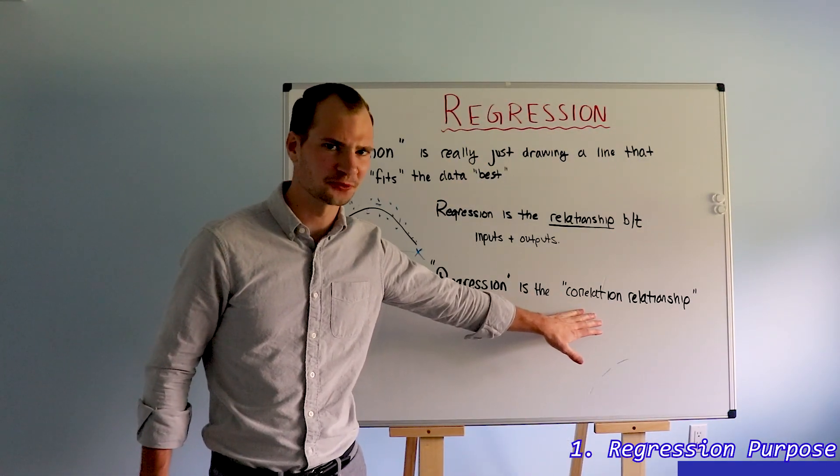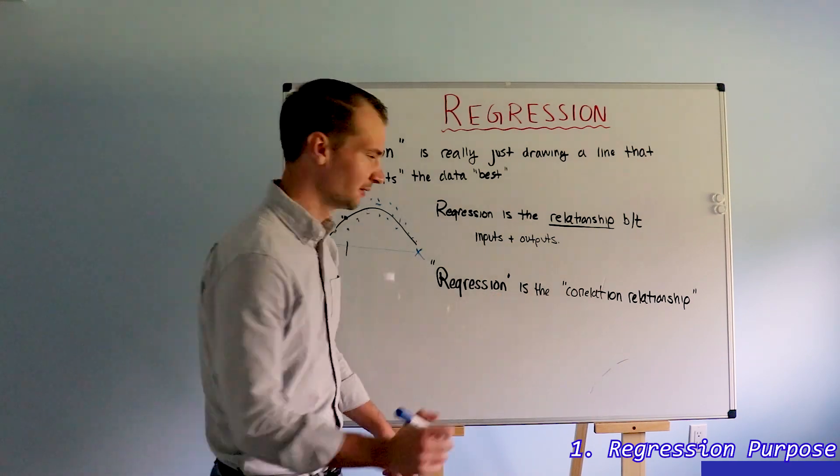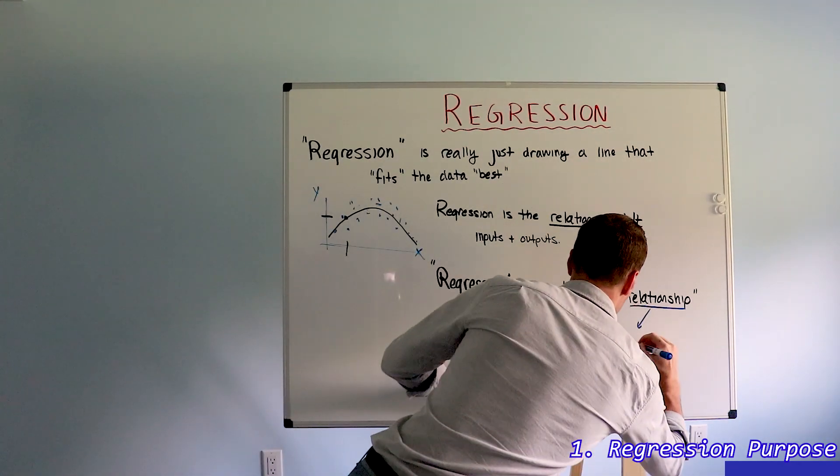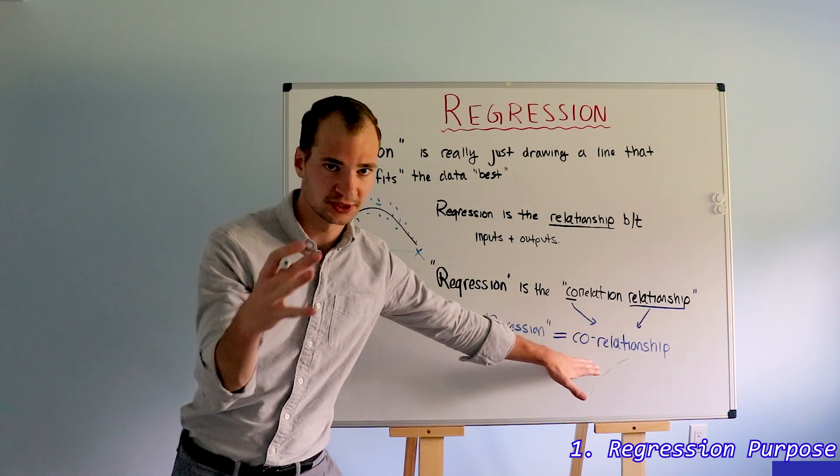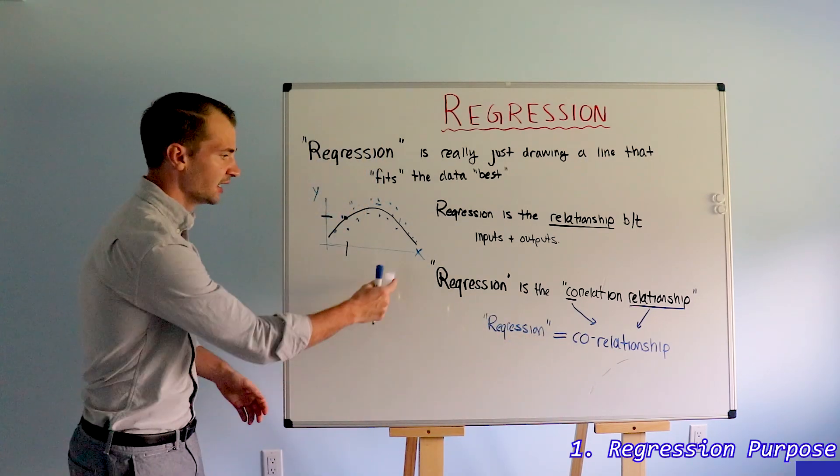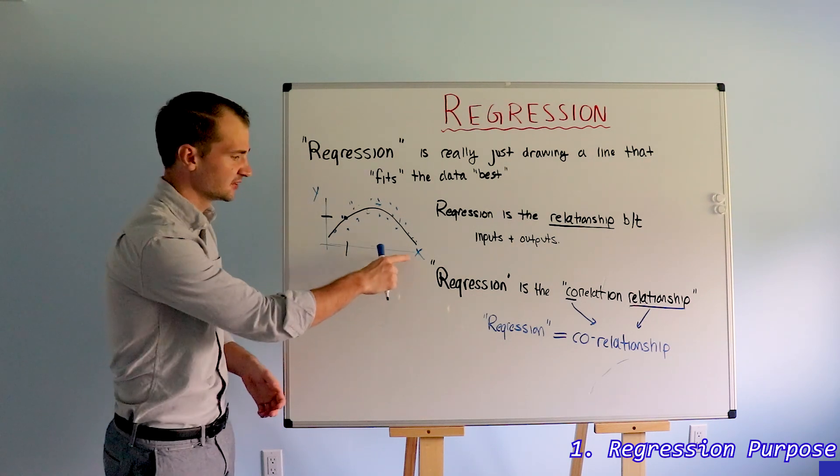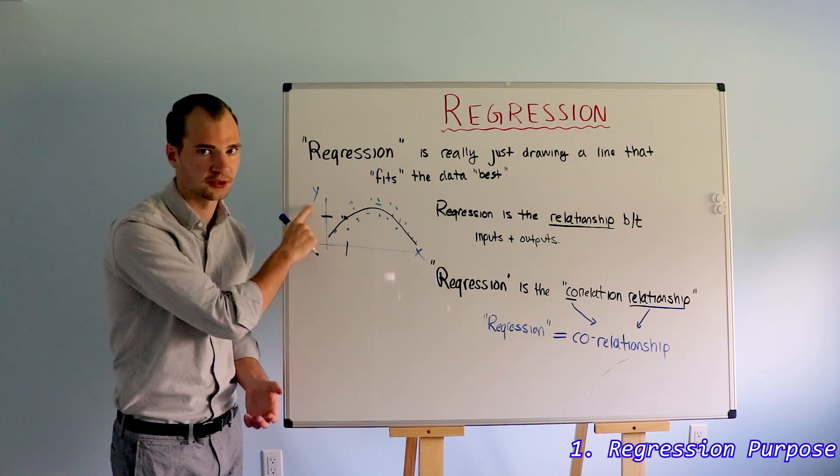Correlation relationship sounds kind of weird, so what if we did some wordplay? This is what I want you to remember, that a regression is really just a co-relationship between an input or several inputs x and a result y.